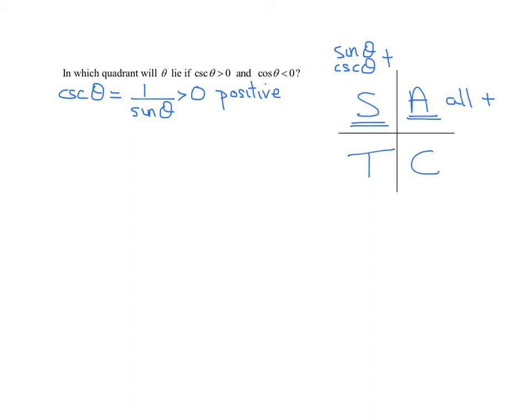In quadrant 3, T stands for the tangent of theta is positive, as is its reciprocal, the cotangent of theta. They're both positive.